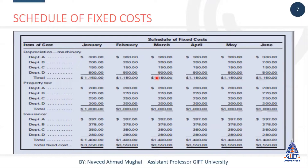Toh hamein pata chal jayega ki hamare agle saal fixed expenses jo hain woh kitne ho sakti hain. Toh inhi data ko use karke ham log agle saal ki planning kar sakein. Aur agar hamare paas yeh wala data nahi hoga, aur hamne is shakal mein isko prepare nahi kiya hoga, toh ham log phir agle saal ki preparation, jo planning hai, woh nahi kar payenge. Toh isliye hamein yeh jo data hai woh ek proper shape ke andar, ek proper way se, hamare paas mehfouz bhi ho, written bhi ho, present bhi ho.